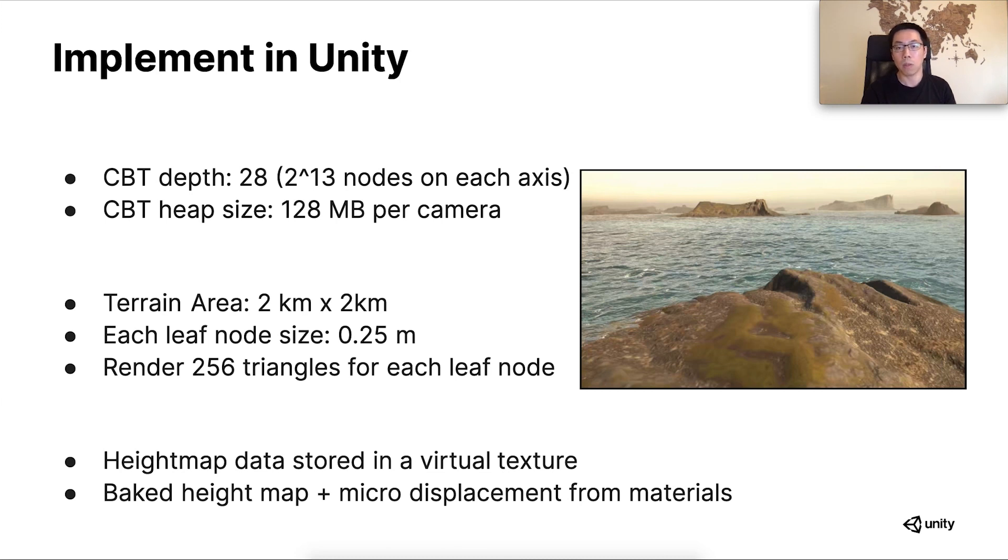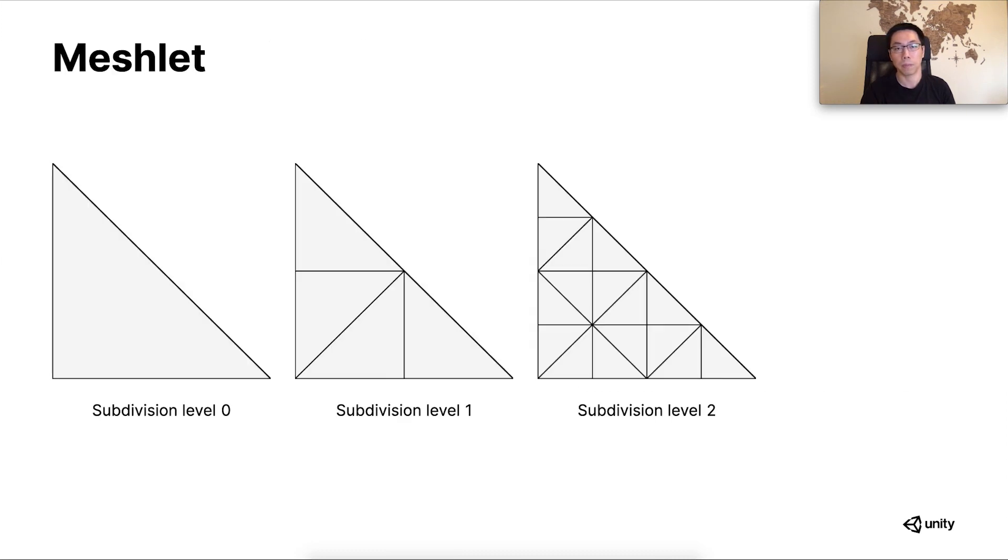It is also worth mentioning that we put the height map data in a virtual texture so that the draw call has access to the entire terrain height map. The height map data has a resolution of an eighth of a meter. On top of that, we blend the micro-displacement textures from the terrain materials to provide details as fine as 1.5 cm resolution.